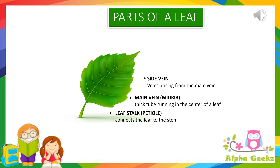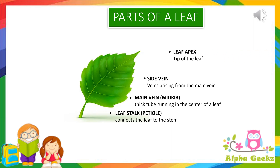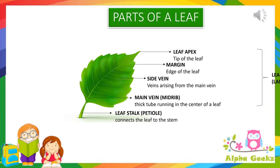The tip of the leaf is called the leaf apex. The edges of the leaf are its margin. Leaf blade is the flat and broad part of a leaf. It enables the leaf to take in sunlight and is also called lamina.